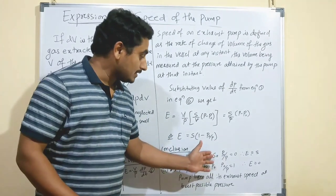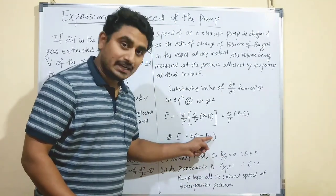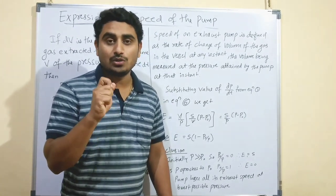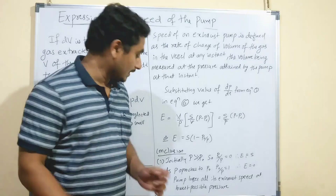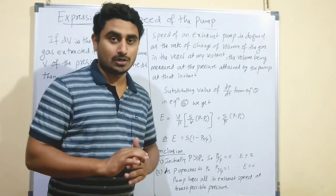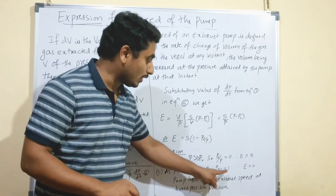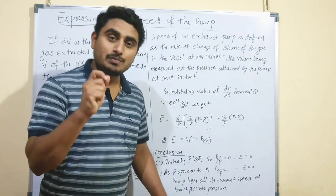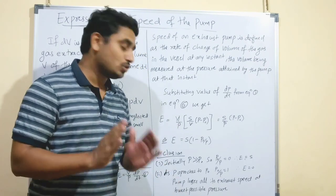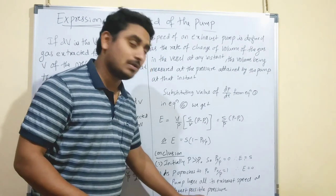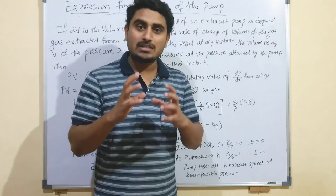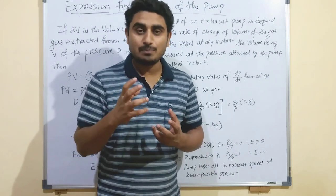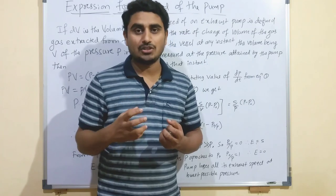Two conclusions follow. First, when P is very much greater than P0, the term P0/P approaches 0, so E = S: the intrinsic speed equals the exhaust speed of the pump. Second, as P approaches P0, the term (1 − P0/P) approaches 0, so E = 0: the pump loses all its exhaust speed at the lowest possible pressure. The pump must therefore be designed to produce high vacuum while maintaining high exhaust speed at a given pressure.